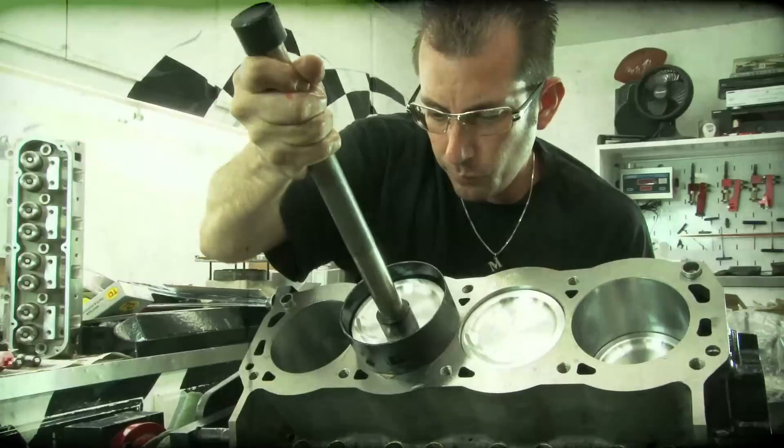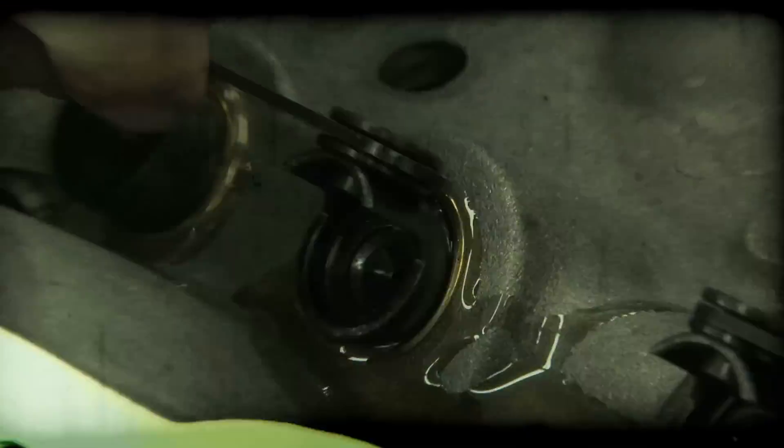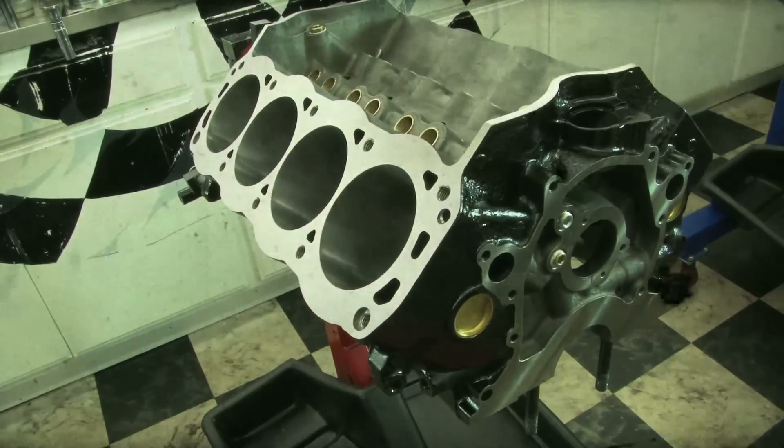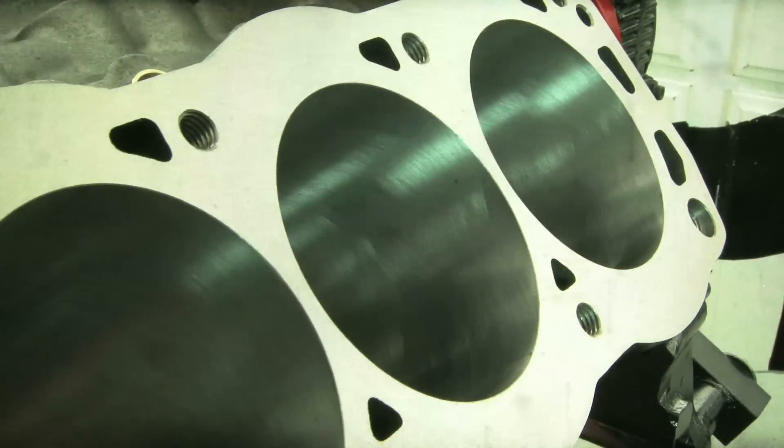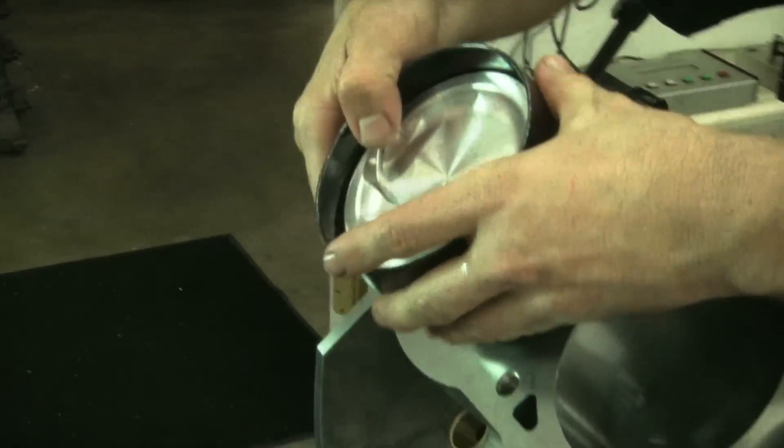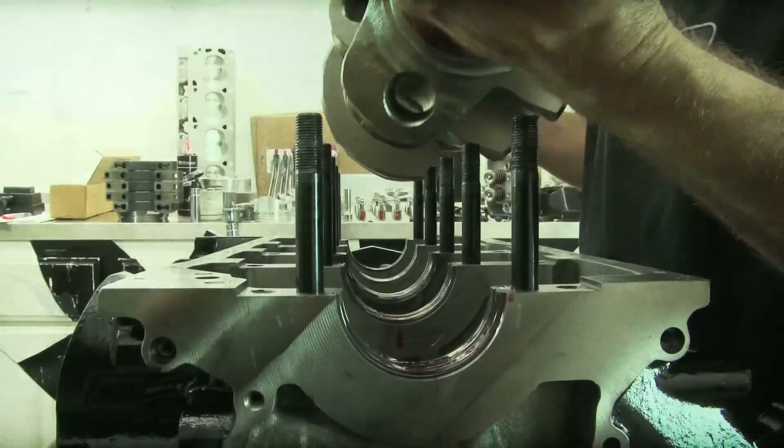In the previous segment, we assembled our low compression short block at QMP. It features a Dart Iron Eagle 9500 deck block with a 4.125 bore, and it's been fitted with a set of Ross 9-to-1 pistons, Eagle I-beam rods, and a forged crank.